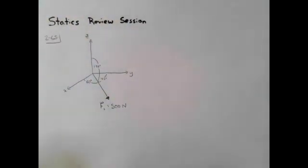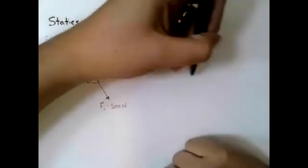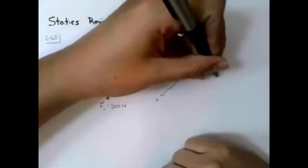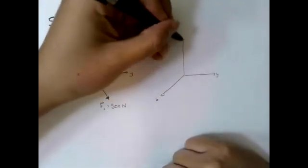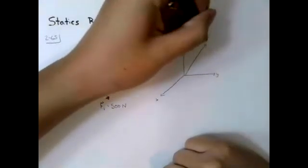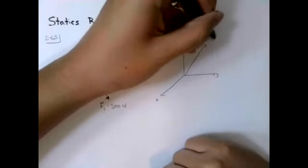There's a second vector and in the figure in the book you're going to see the two vectors in the same drawing, but I don't want to mix up my drawing. So I'm just going to draw the second vector on the side and this is my vector F1 which has a magnitude of 300 newtons.